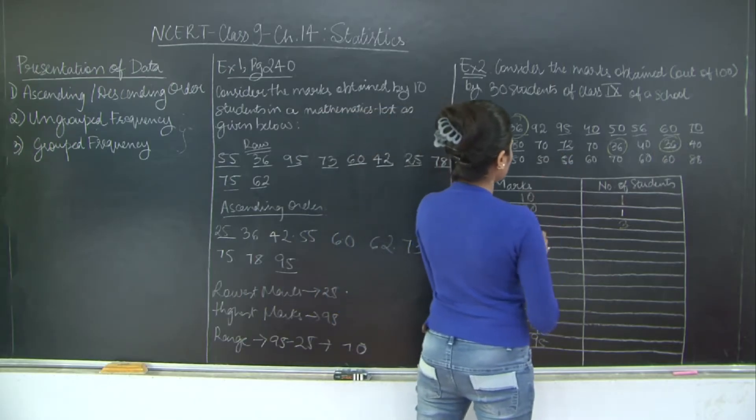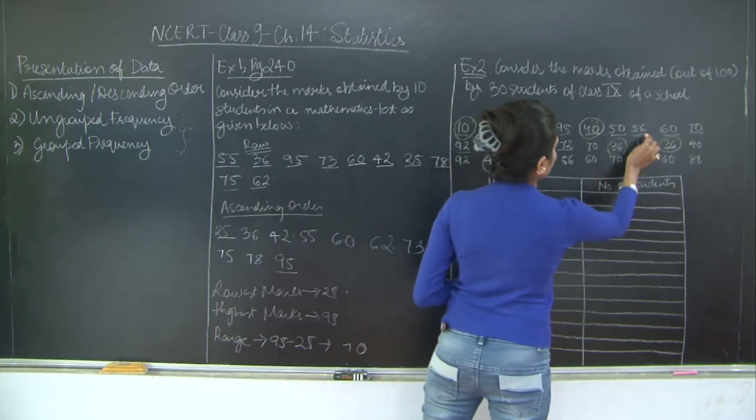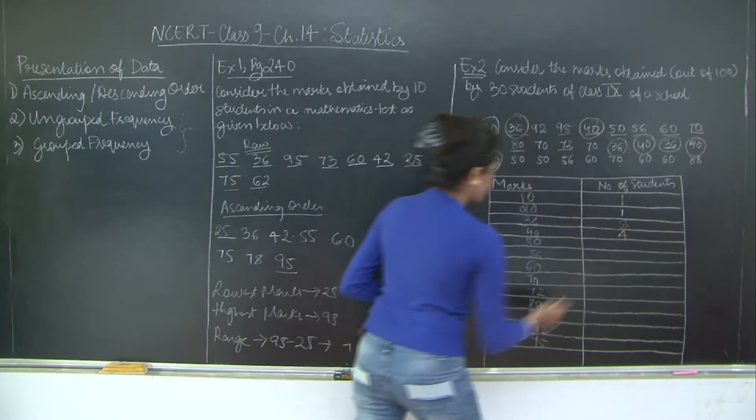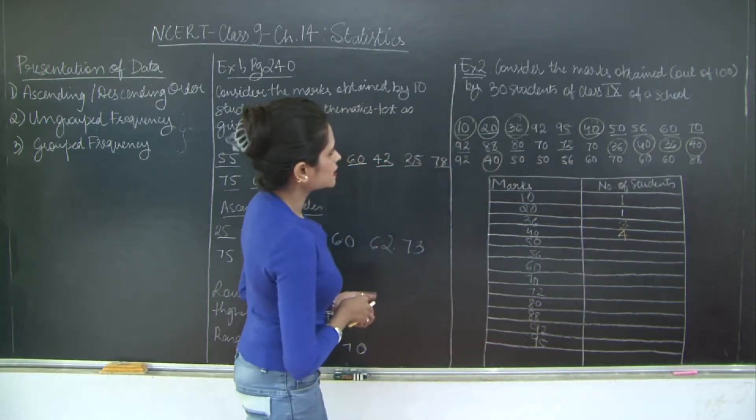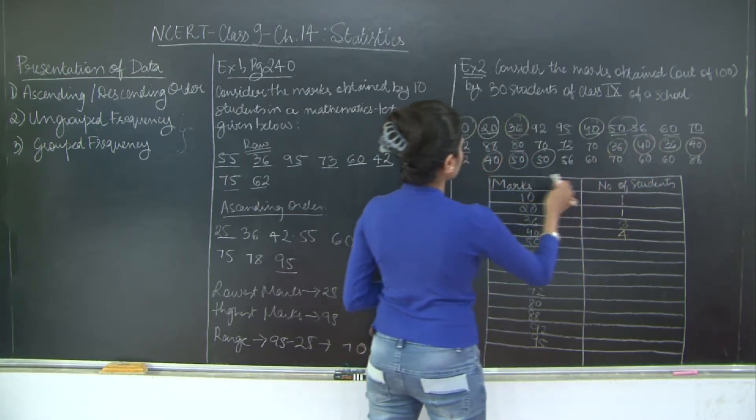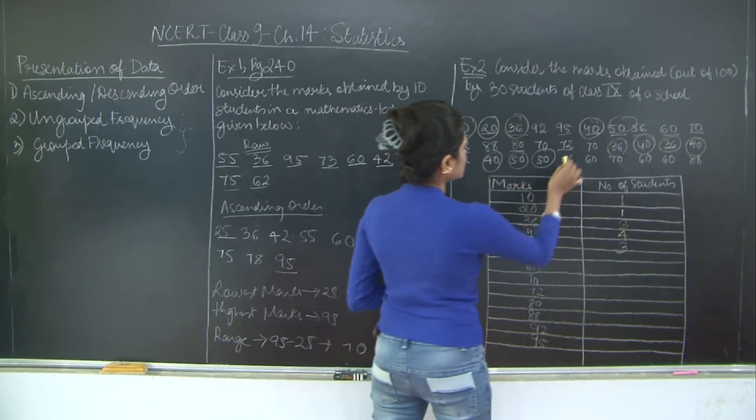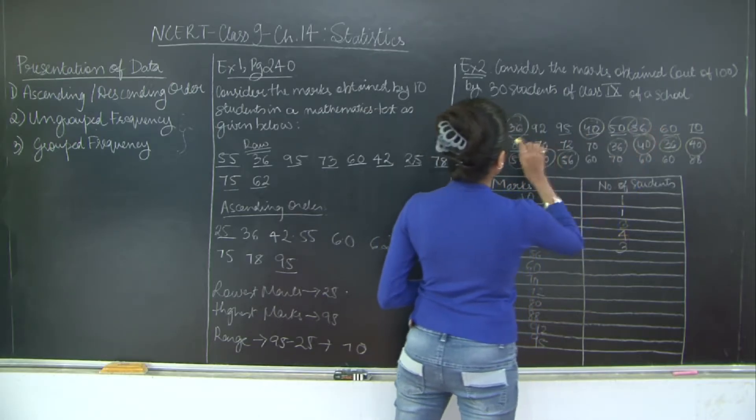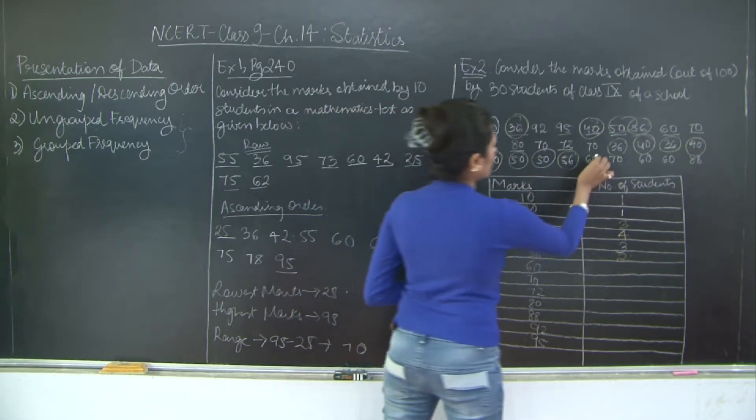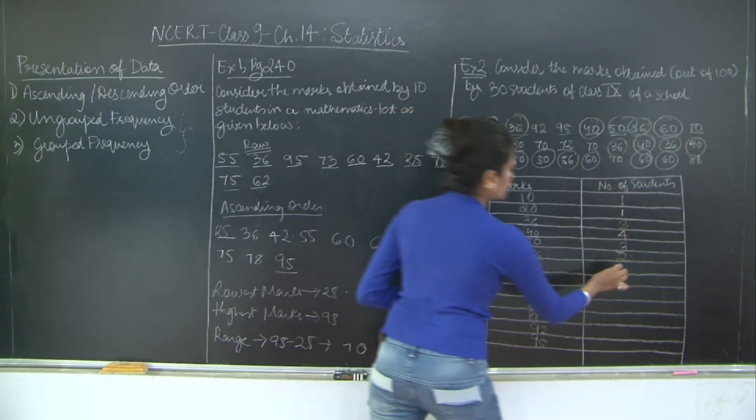Let's see 40. 40 is present 1, 2, 3, 4 times. Then what about 50? 50 is present 1, 2, 3. That's it, 3 times. Then 56. 56 is present 1, 2, 2 times. Then 60. 60 is present 1, 2, 3, 4 times. So 4 times.